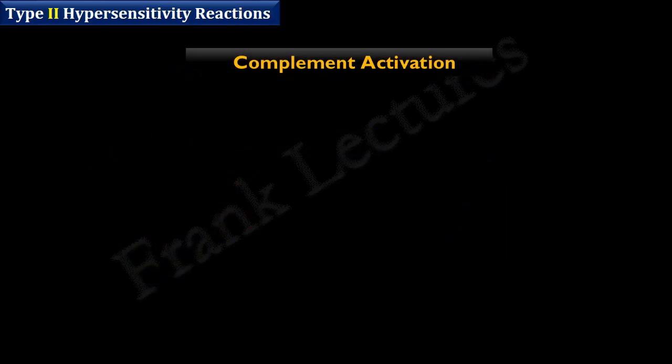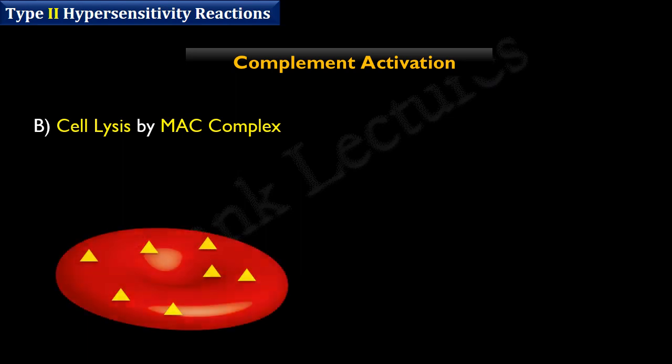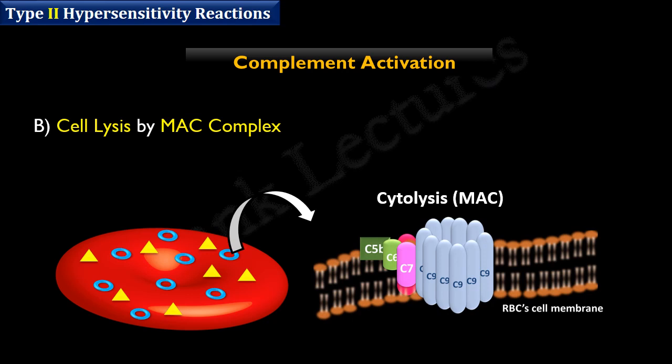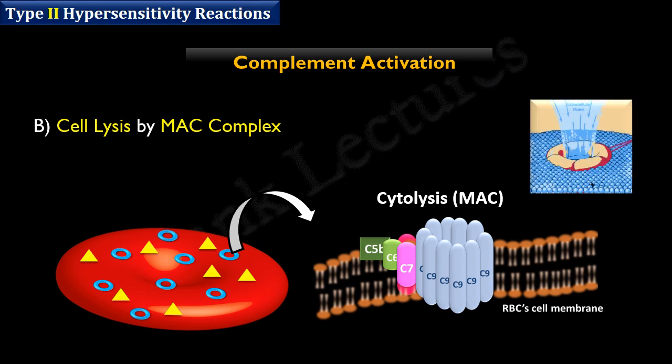The second outcome of complement activation is cell lysis by the membrane attack complex. This happens if the complement cascade goes to completion. The membrane attack complex is a group of complement proteins deposited on the target cell surface; it forms a pore in the membrane of the cell and results in its destruction by cell lysis.